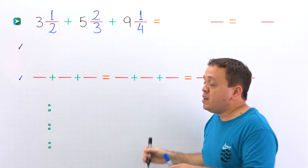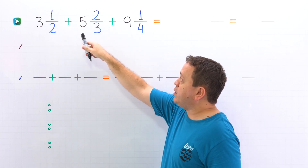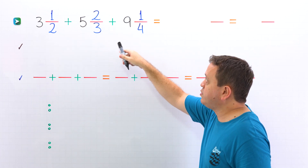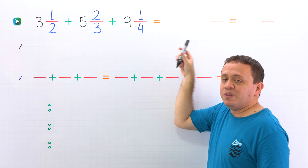Nice! In our example, we're going to add three and one half plus five and two thirds plus nine and one fourth.